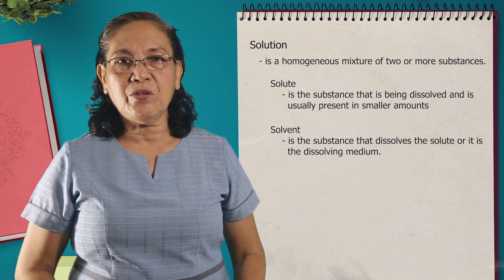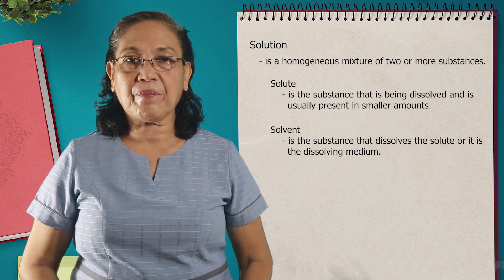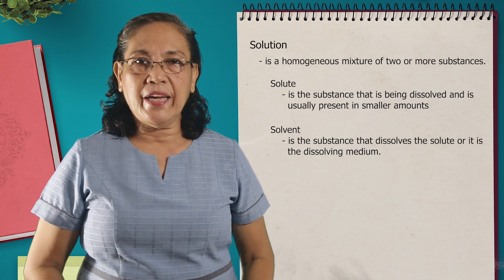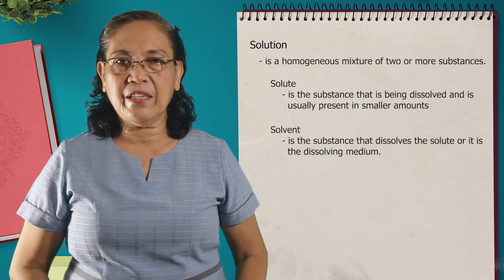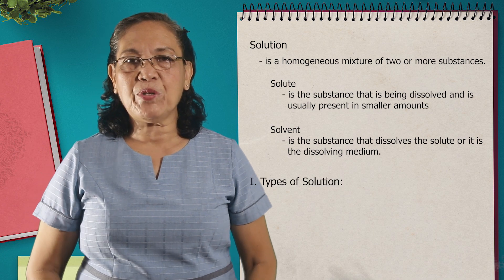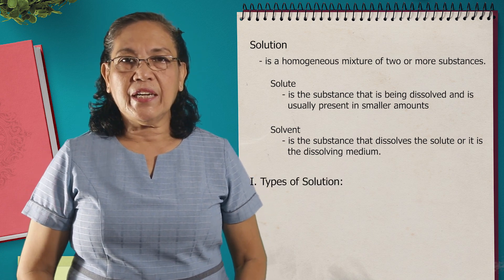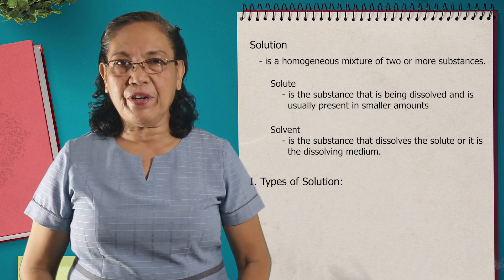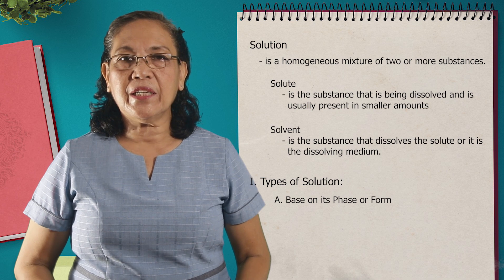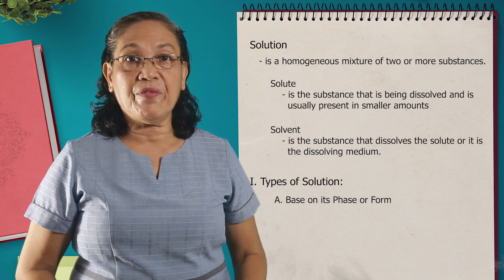For example, in the solution of sugar and water, the solute is the sugar, and the solvent is the water. Let us discuss the types of solution. The types of solution can be classified according to, number one, based on the phase or the state or the form of the solution.